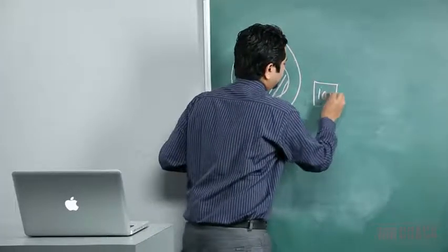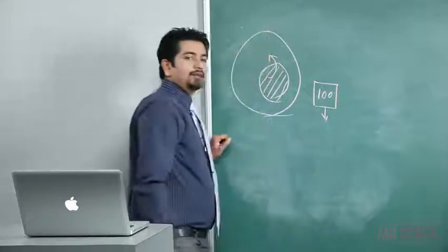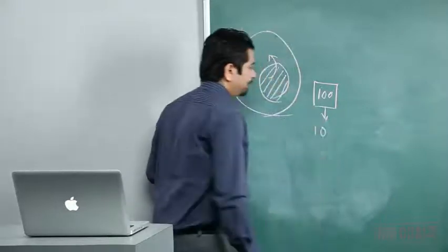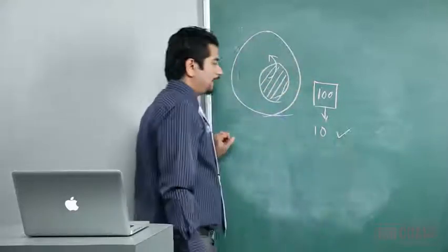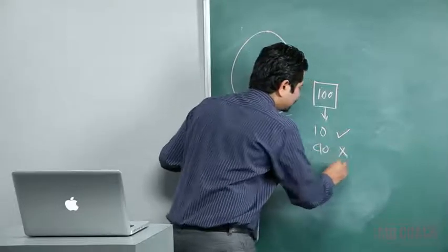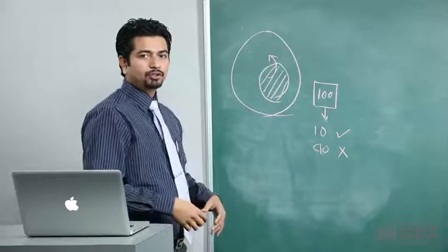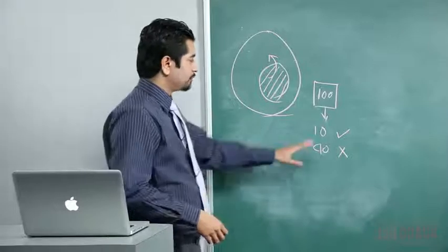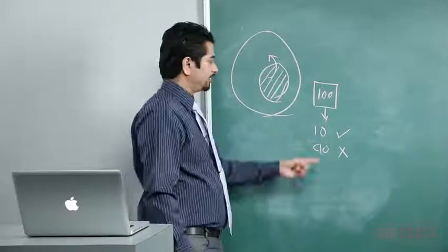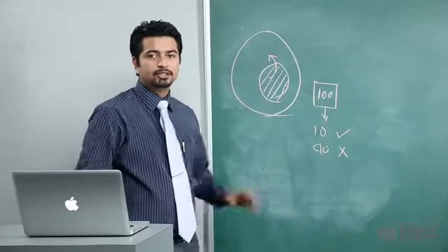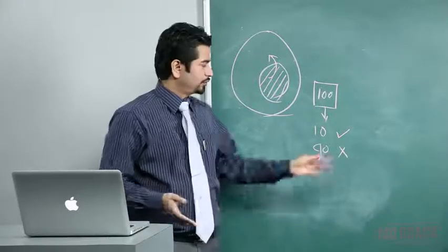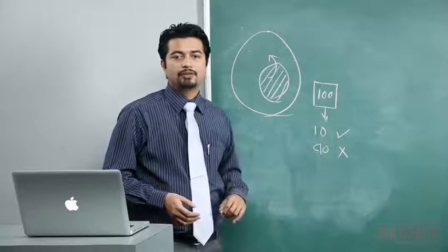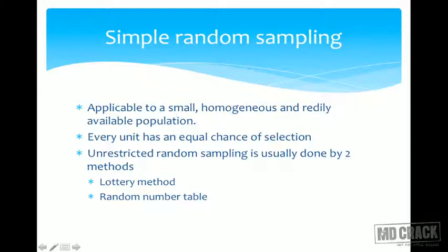For example in simple random sampling: with a population of 100 people and a desired sample of 10, make 10 chits with a tick and 90 chits with a cross, mix them up, and have each person in the class pick a chit. If they pick yes they are included; if no, they are not. Nobody was influenced and the selection was unknown to participants — that is a lottery method. It is called simple random sampling because it is simple and random.